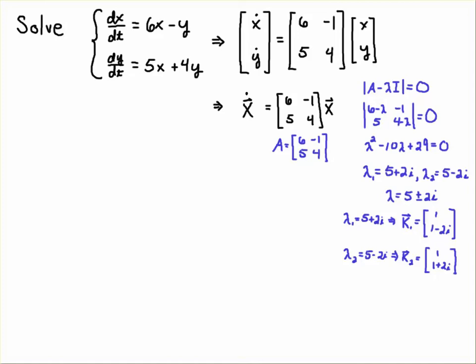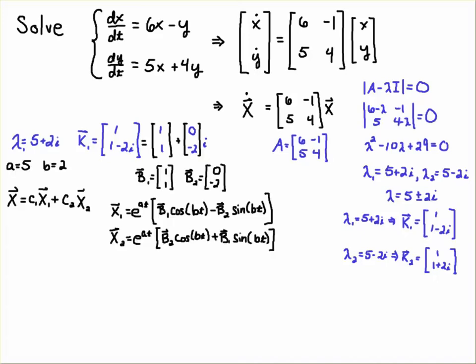complex conjugate of k1. Okay, so I'm going to pick lambda 1 is 5 plus 2i and the eigenvector corresponding to that eigenvalue is [1, 1 minus 2i]. And then I'm going to break up the eigenvector to its real part and imaginary part.